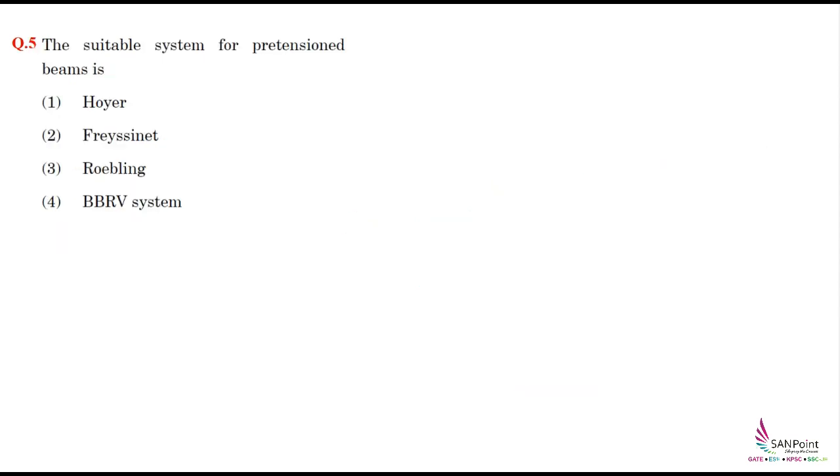The last problem was from pre-stress concrete. They're asking the most suitable method for pre-tensioned beam. The Hoyer method, also called Hoyer's long line method, is used in pre-tensioning, while the remaining three - Freyssinet, Roebling, and BBRV system - are methods of post-tensioning. If you have this information, you can mark the correct answer as option 1. These were the problems from the WRD paper of 2017 from RCC.